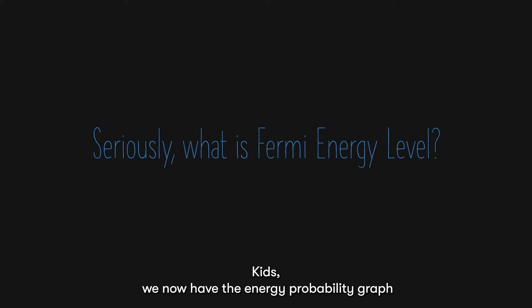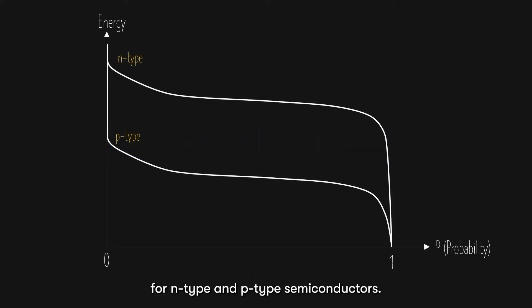Kids, we now have the energy probability graph for n-type and p-type semiconductors. The Fermi energy level is the energy level in which the probability of an electron exists at a state in that energy level is 0.5.